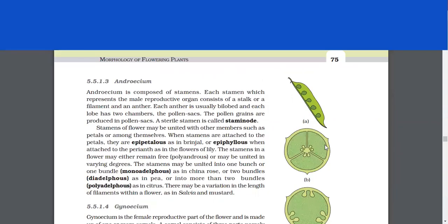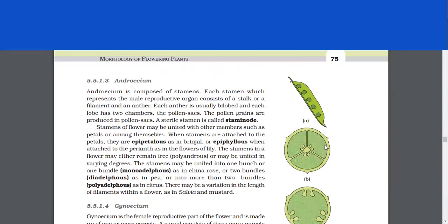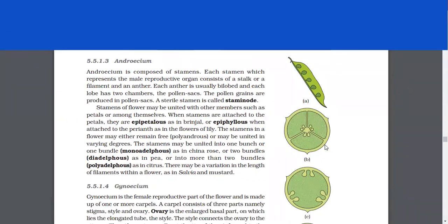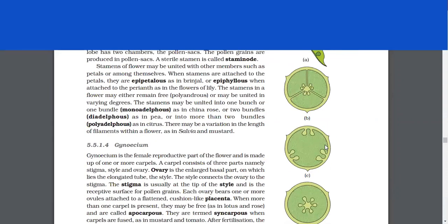Androecium. Androecium is composed of stamens. Each stamen, which represents the male reproductive organ, consists of a stalk or a filament and an anther. Each anther is usually bilobed and each lobe has two chambers, the pollen sacs. The pollen grains are produced in pollen sacs. A sterile stamen is called staminode. Stamens of flower may be united with other members, such as petals or among themselves. When stamens are attached to the petals, they are epipetalous, as in brinjal, or epiphyllous, when attached to the perianth, as in the flowers of lily.